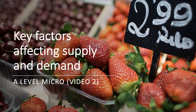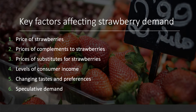Welcome to the second of a little suite of videos looking at an introduction to markets. We're trying to understand supply and demand in the market for strawberries. In the first video we had eight factors that could impact on the market and cause the price to go up or down. In this video we're going to take a more detailed look at the key factors affecting supply and demand — what we call the conditions of demand and supply.